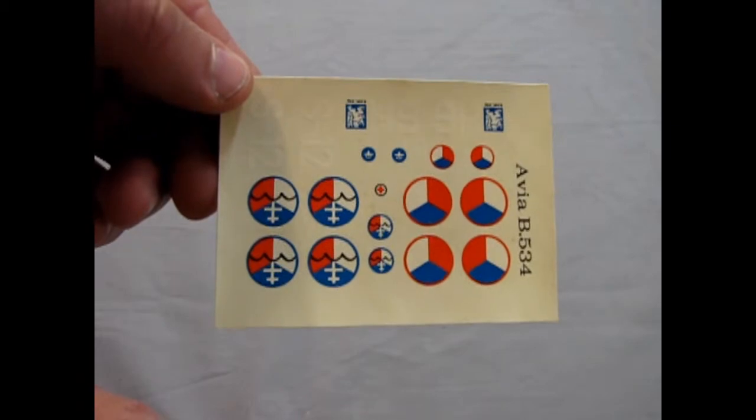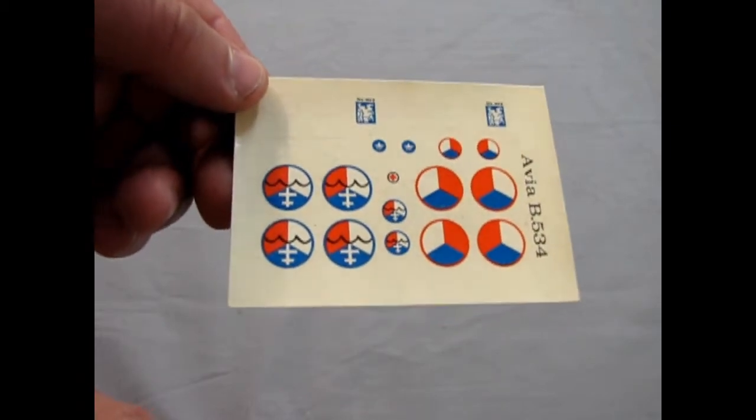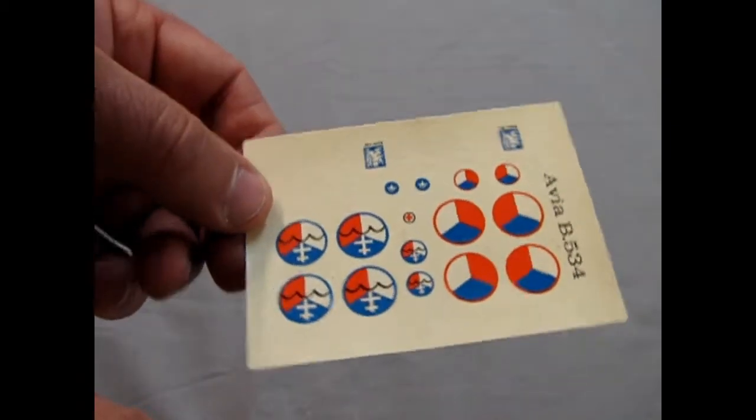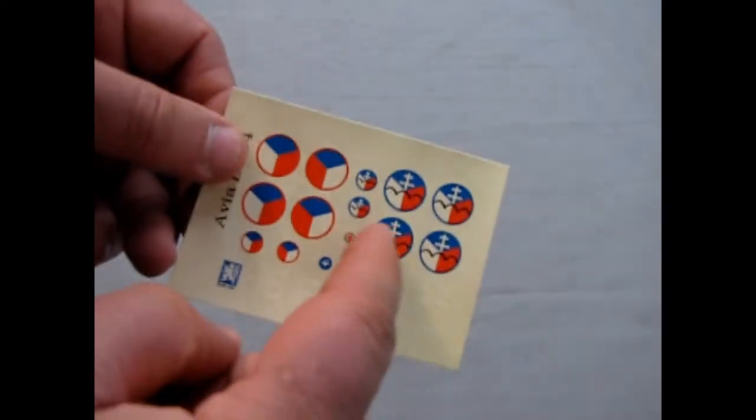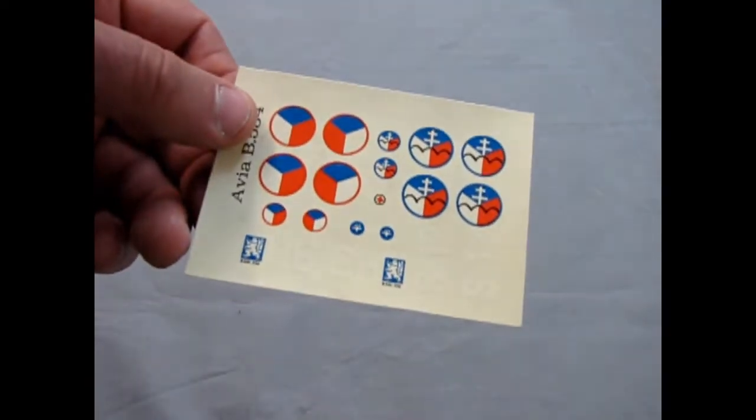However, this is the decal sheet. I don't know if the color registry is quite right, but they are quite bright decals. So, these would be for the Uprising, I think. But yeah, quite a cool little decal sheet.